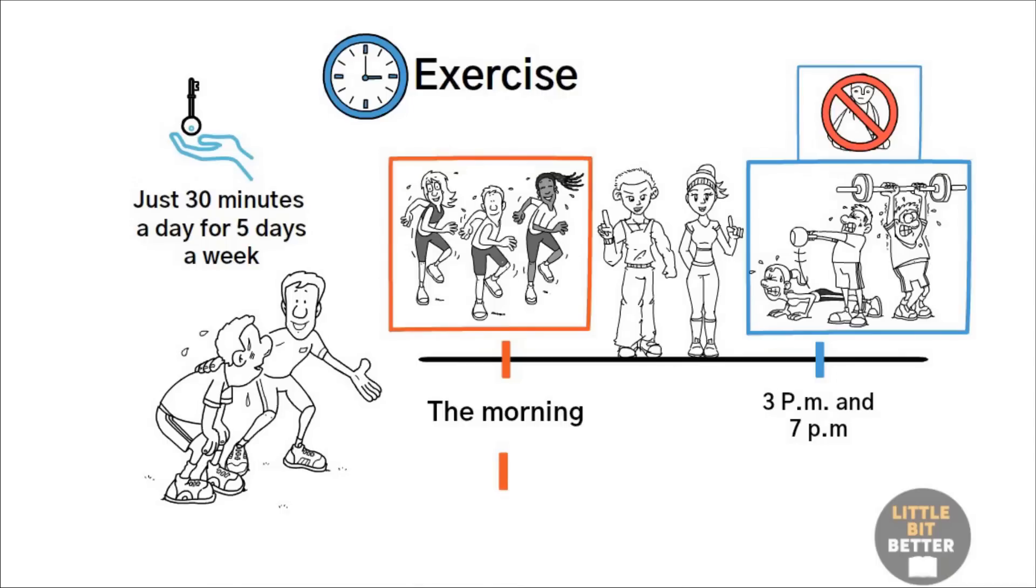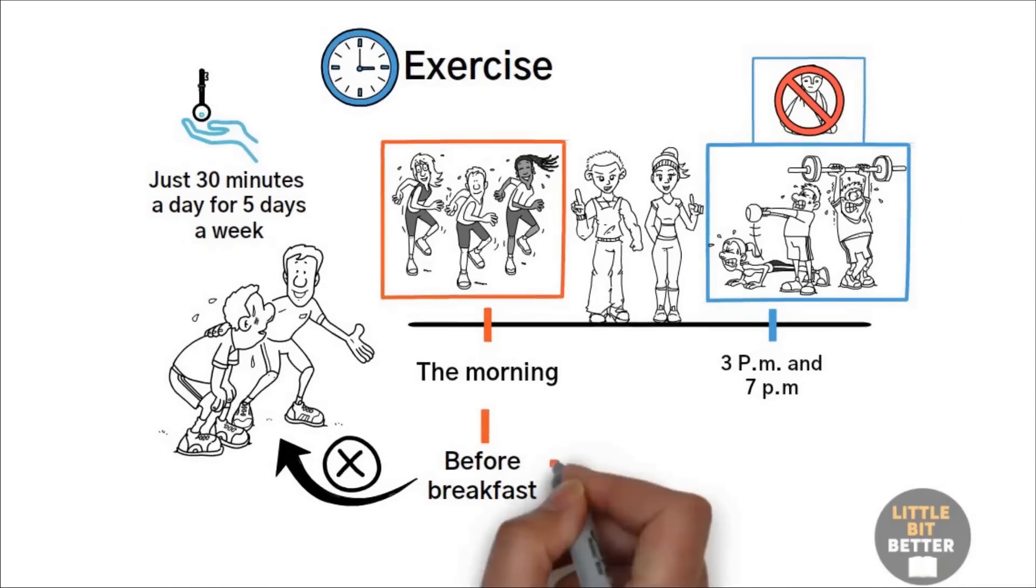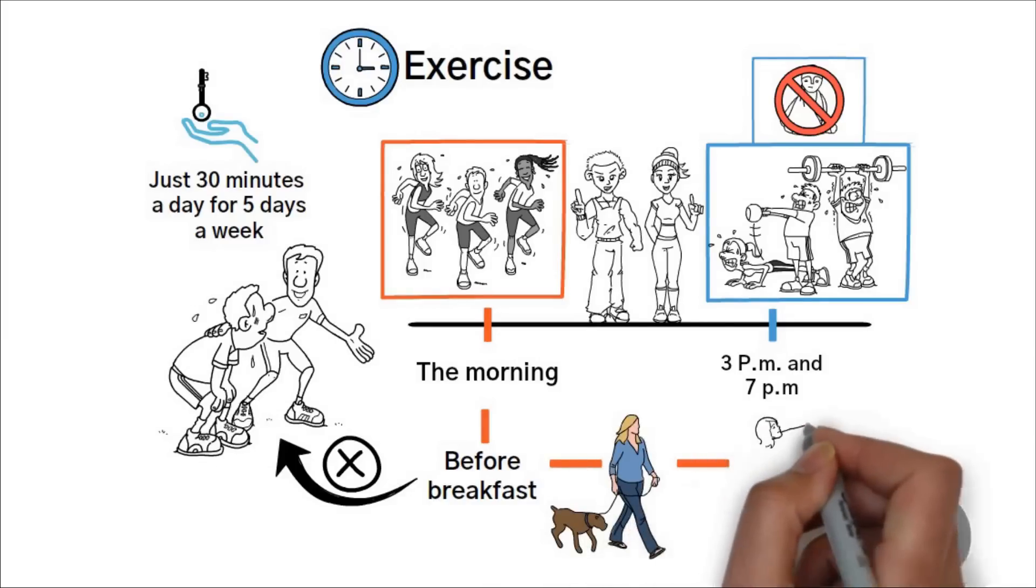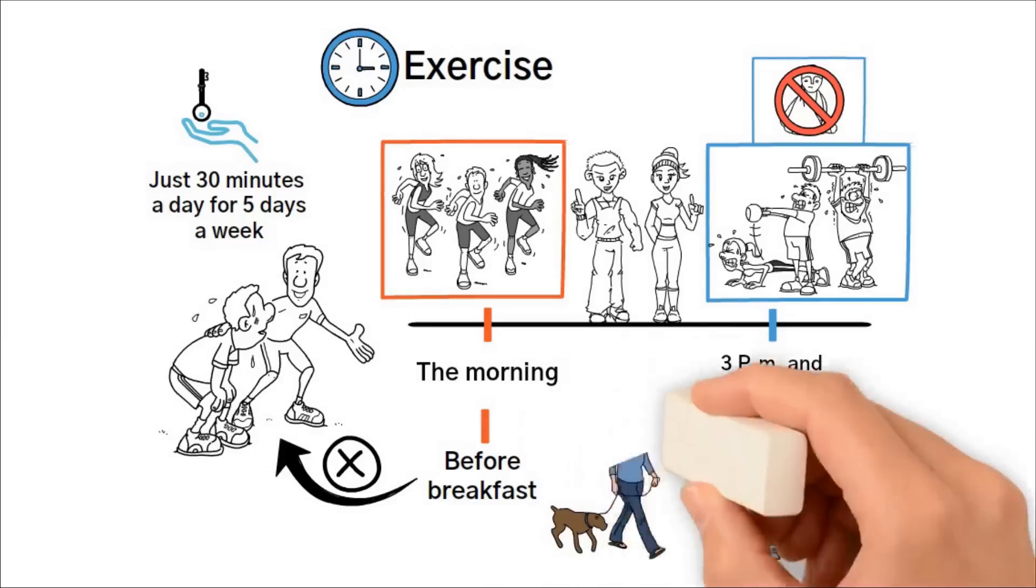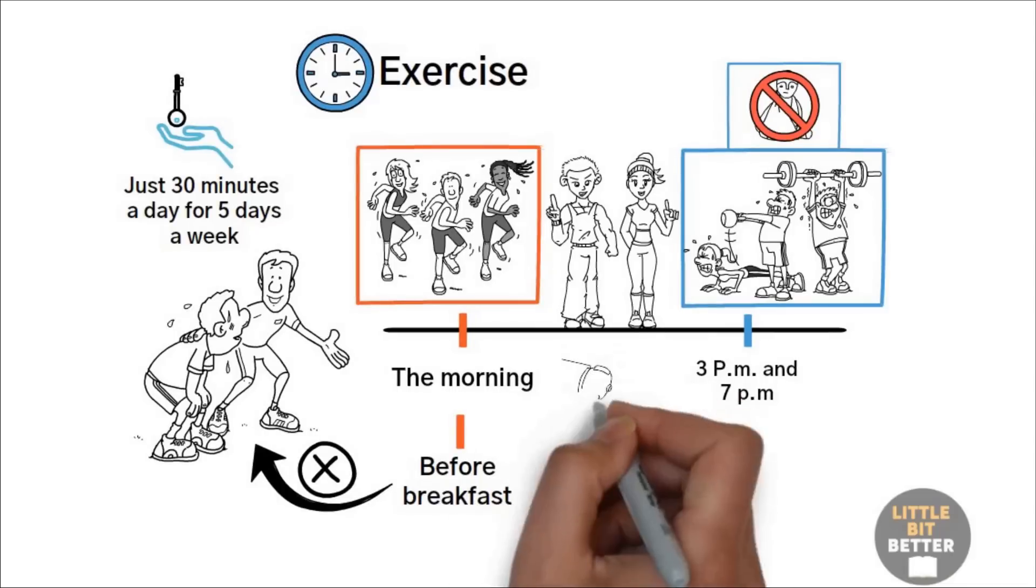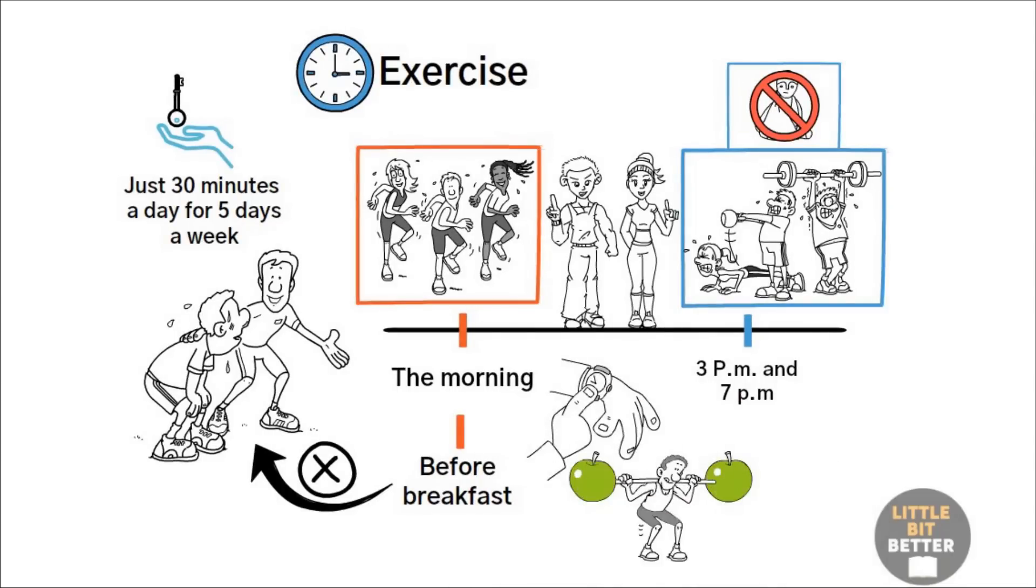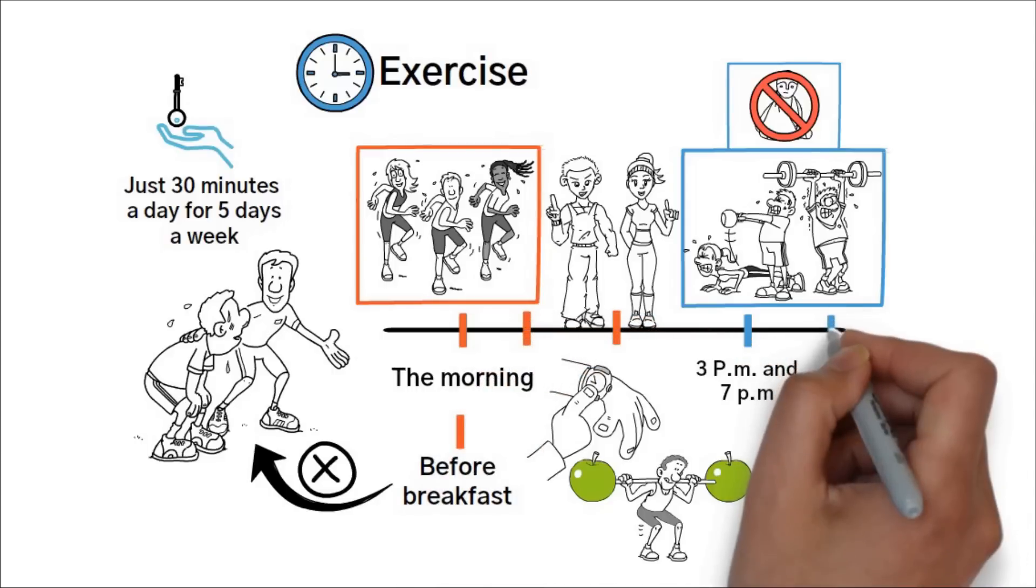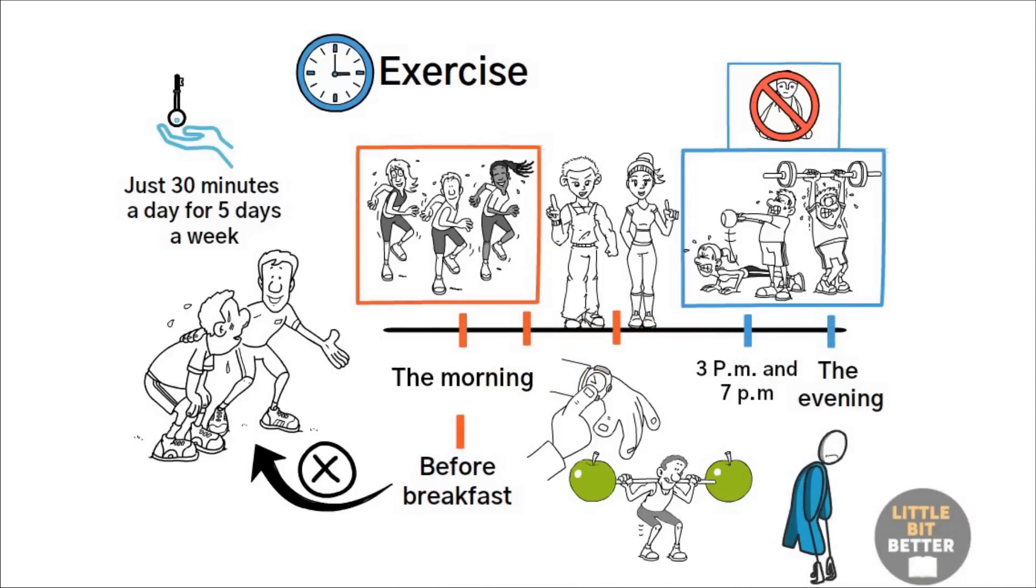If you decide to exercise before breakfast, make sure you don't engage in strenuous or physically demanding exercise. It's okay to walk or cycle before breakfast, but not lifting heavy weights, for example. Finally, in case your schedule doesn't allow you to do your exercise at once, then divide it into two or three segments of 10 to 15 minutes per day. But avoid exercising in the evening because it will ruin your sleep.